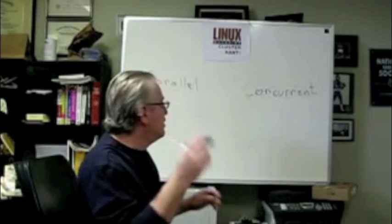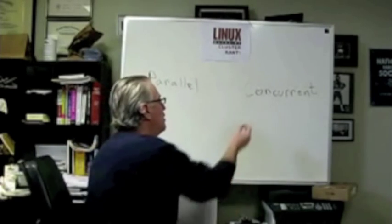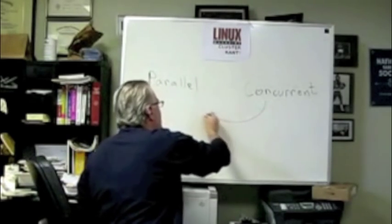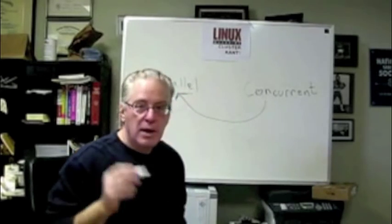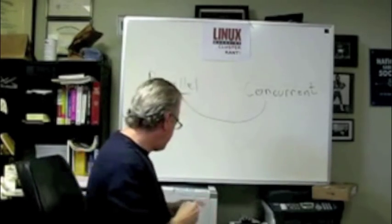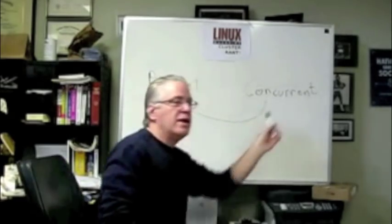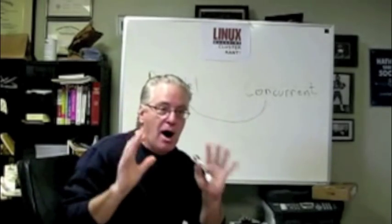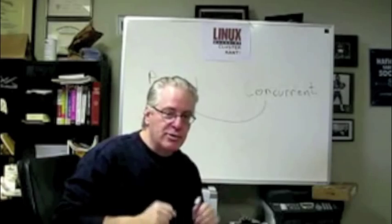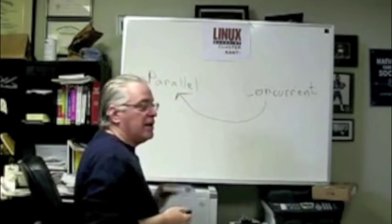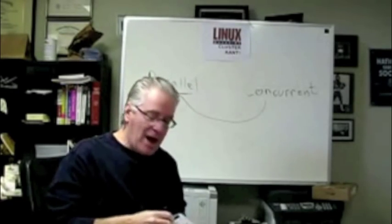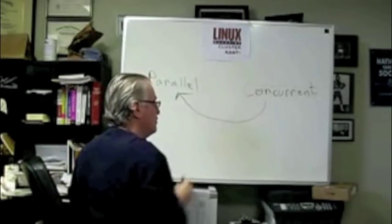So the point is, concurrent is often used to mean parallel all the time. It's not the case. Concurrency is a property of whatever process or thing you're talking about. Parallelism is a property of how you're going to execute the concurrency.